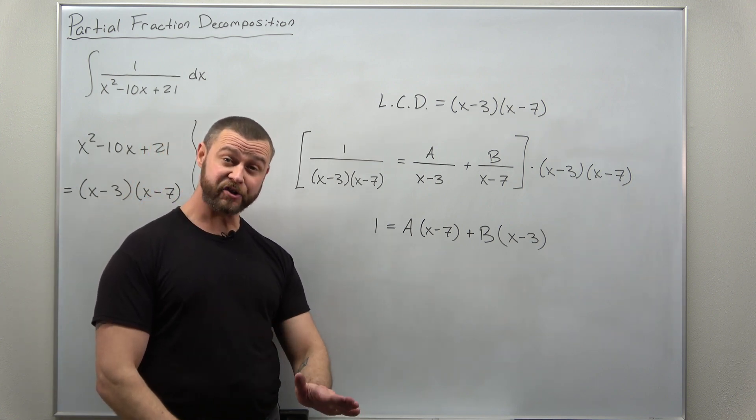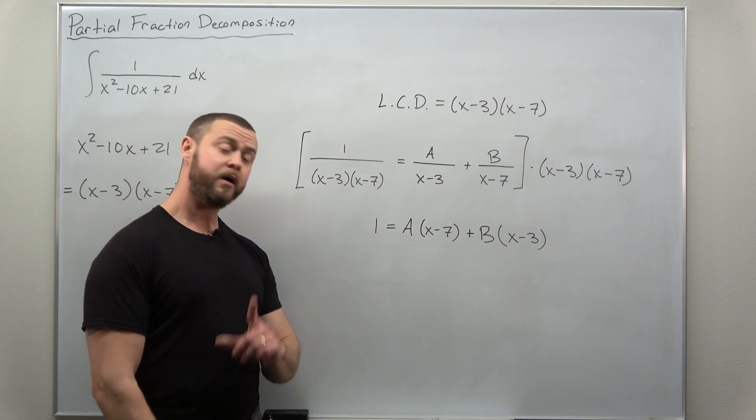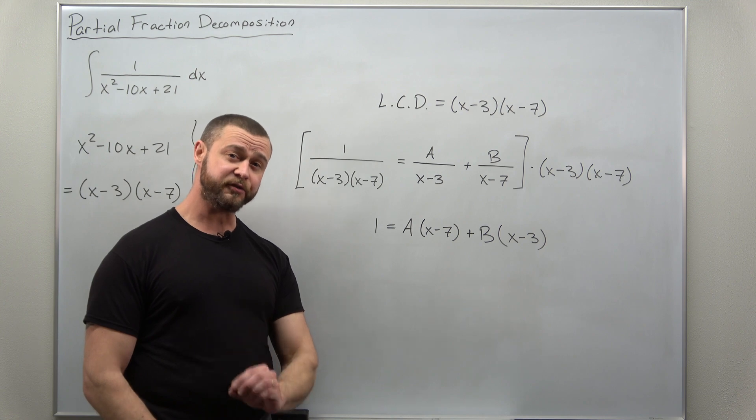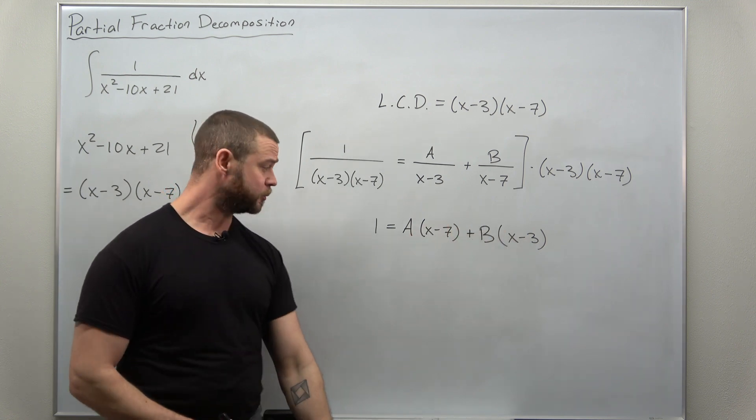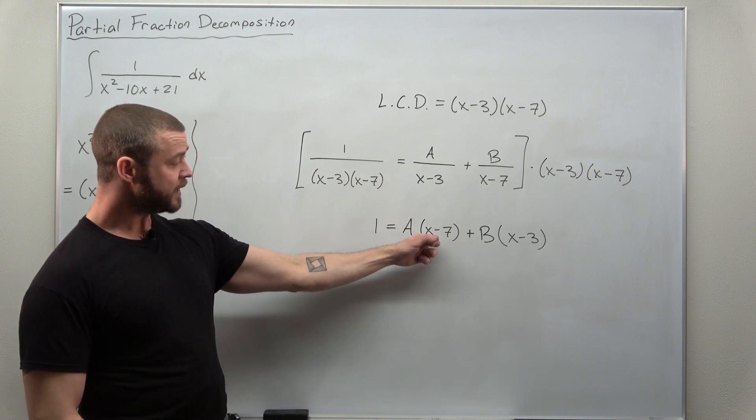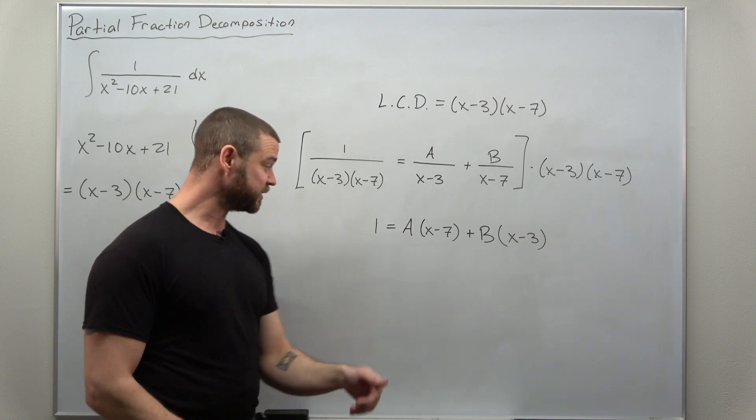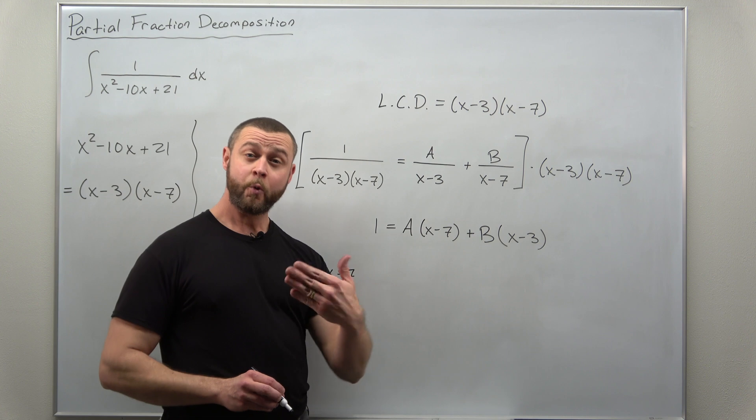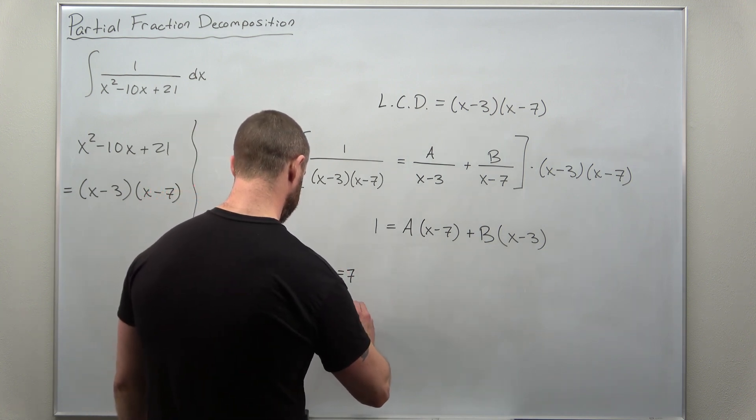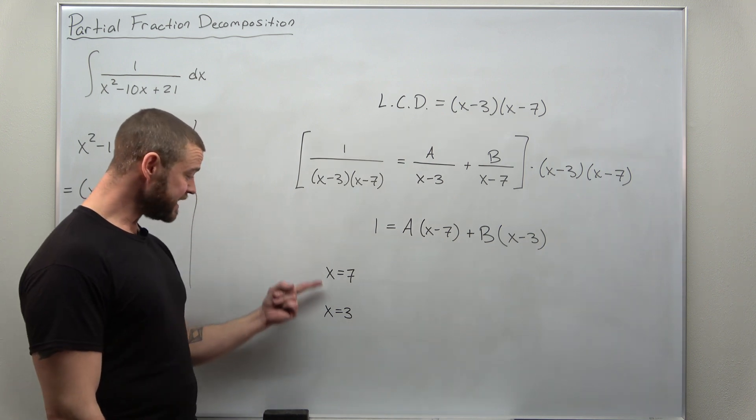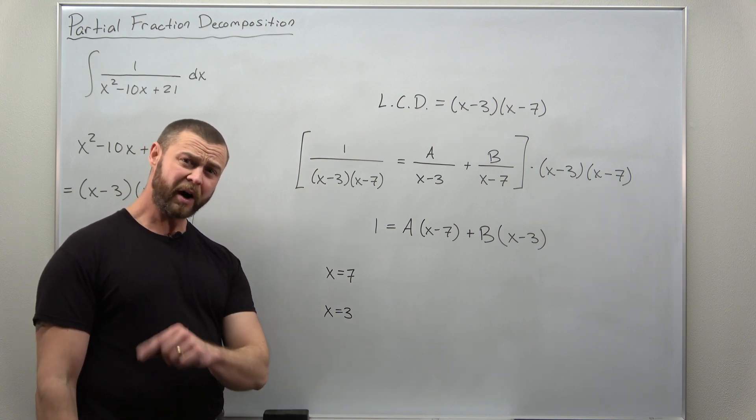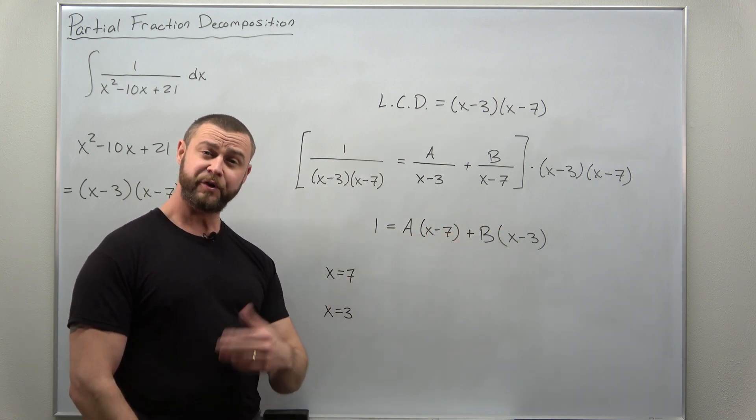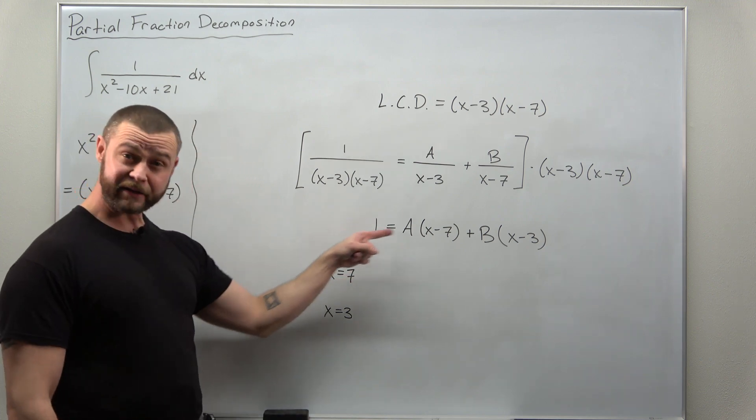From here, now that we have no fractions, that should be easier to solve for the values of A and B. We're going to use a method that I call plugging in. In other words, we're going to plug in well-chosen values for x that will make some of the factors become 0. So if we take a look at the first factor, x minus 7, we might get 0 by plugging in x equal to 7. And then to make the x minus 3 factor become 0, we can plug in x equal to 3. Now technically you can plug in any two values for x that you want, but 7 and 3, those are the two values of x that make the individual linear factors become 0. So again, always choose well-chosen values that make those factors become 0.